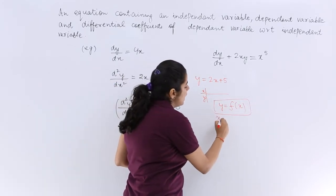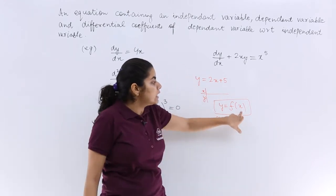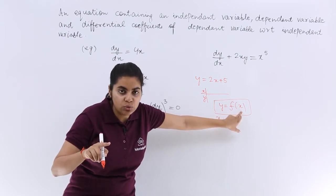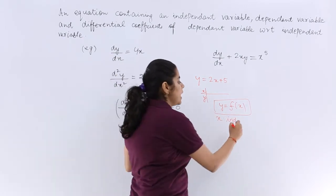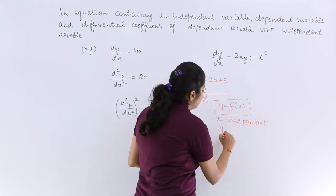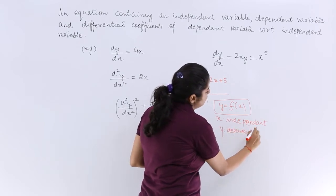So here my x is the independent variable, because it is not dependent upon y. Its value can be decided and accordingly, what will happen? Accordingly the value of y will be obtained. So y is your dependent variable.